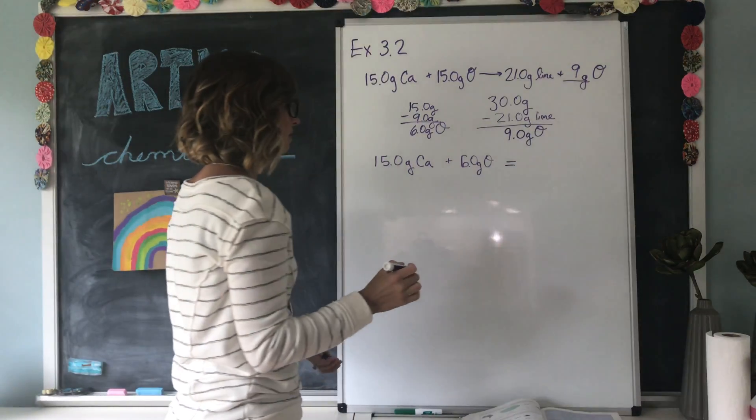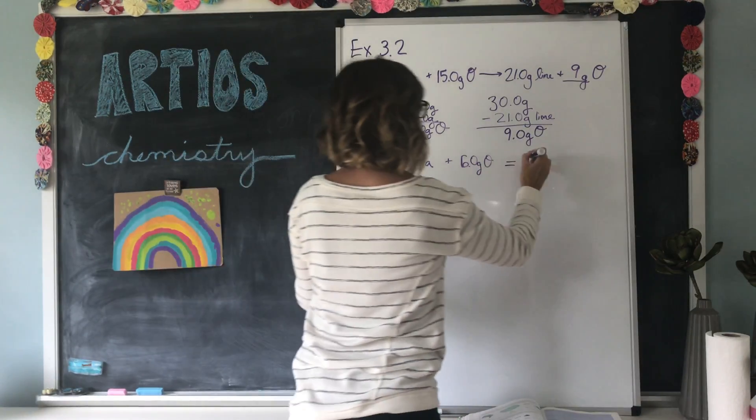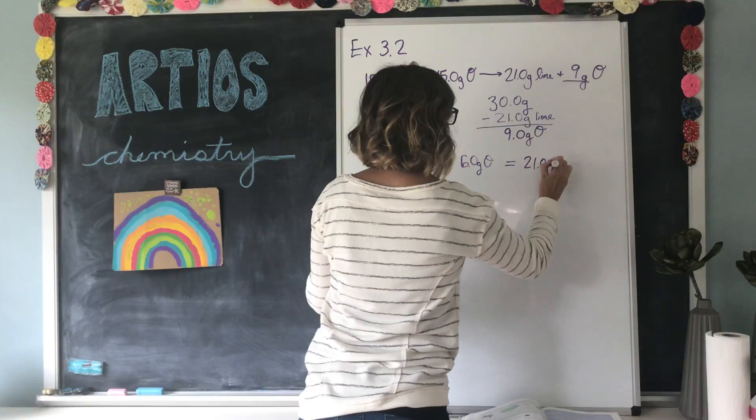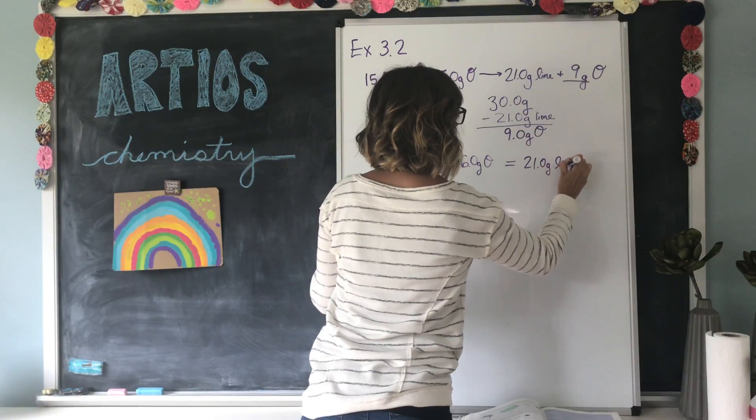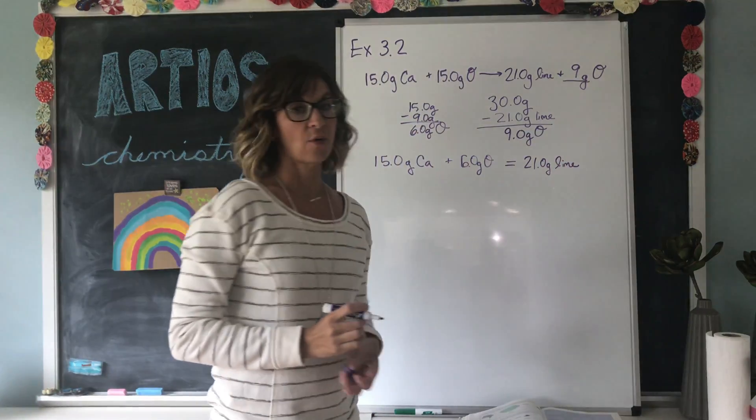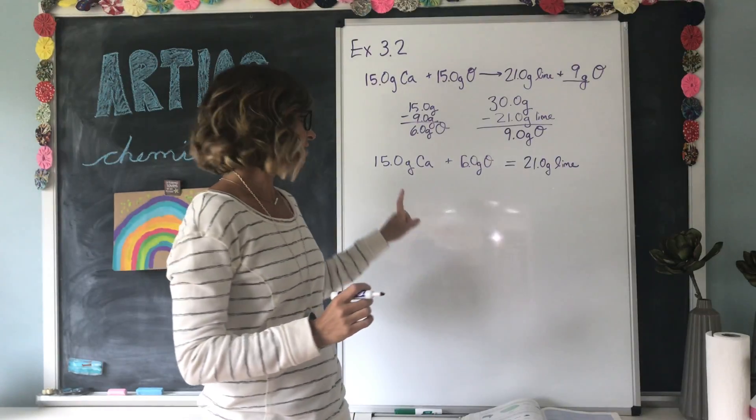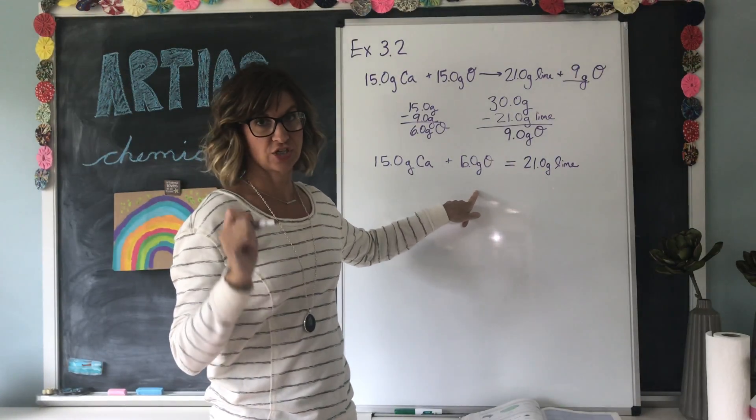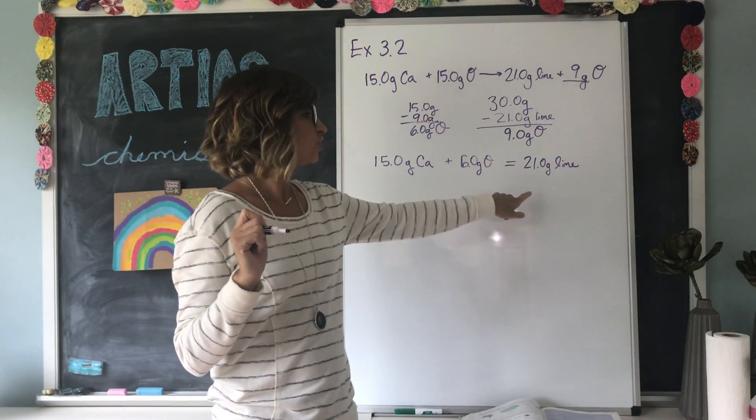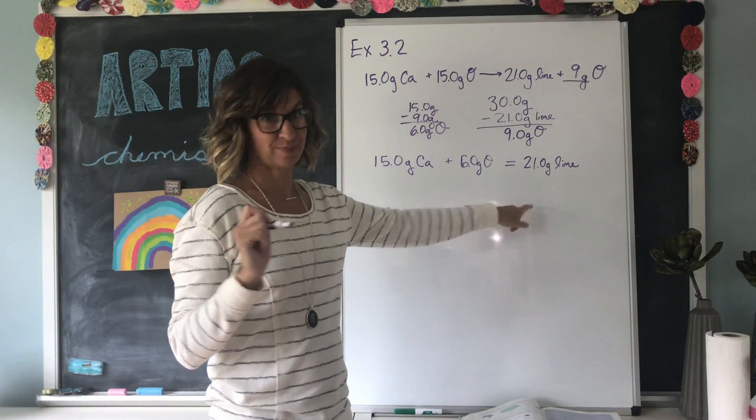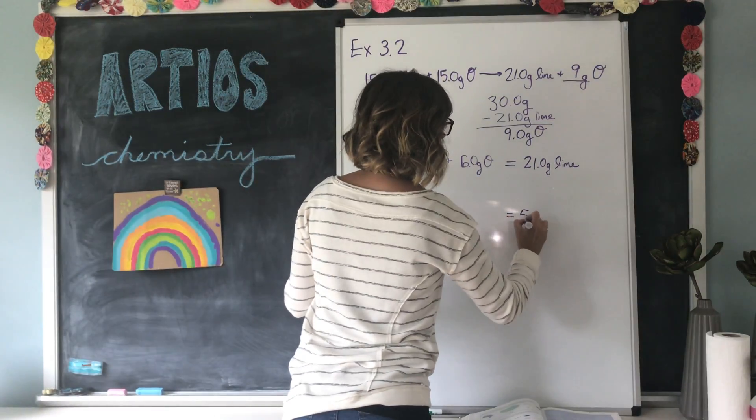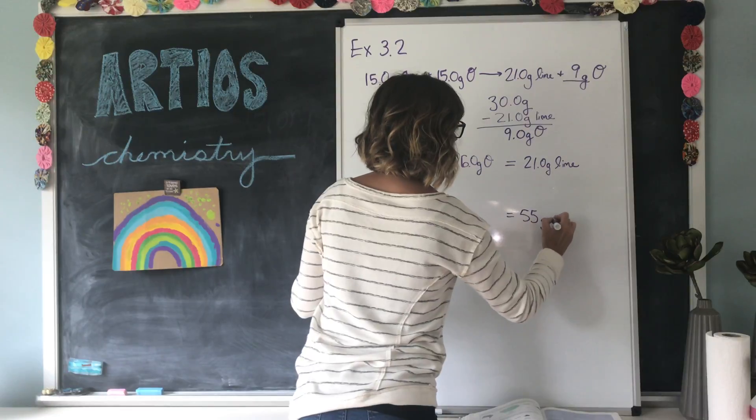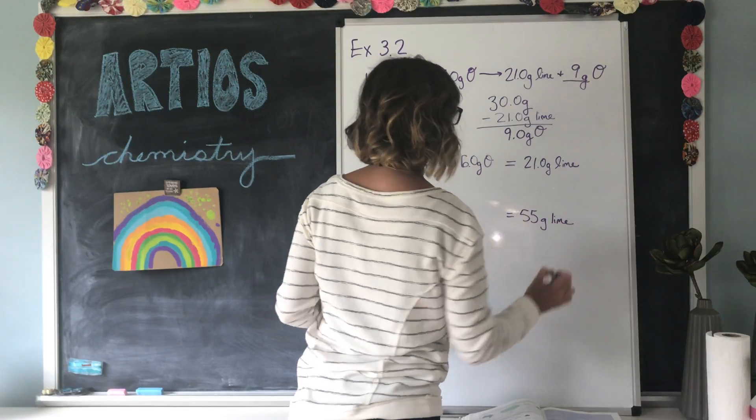And that equals 21.0 grams of lime. Now, our question says, how much calcium and how much oxygen is needed to make 55 grams of lime? So in the end, now we want 55 grams of lime.